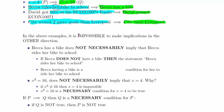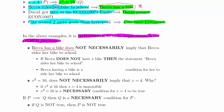However, it's important to realize that it is impossible to make the implication the other way around. We said Becca rides her bike to school implies that Becca has a bike. However, Becca having a bike does not necessarily imply that she also rides her bike to school. So Becca having a bike is not a sufficient condition for Becca riding her bike to school, because it doesn't necessarily imply that.